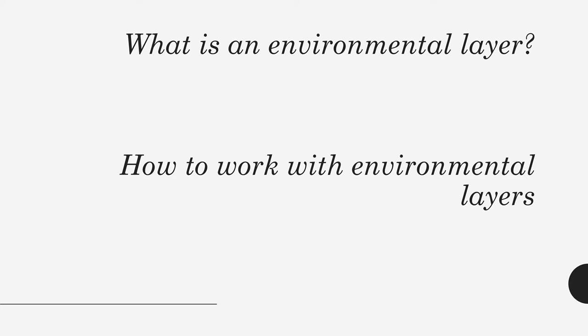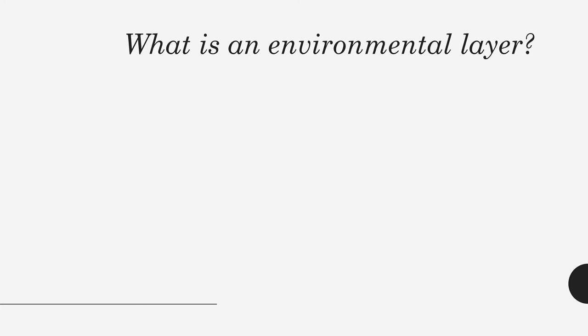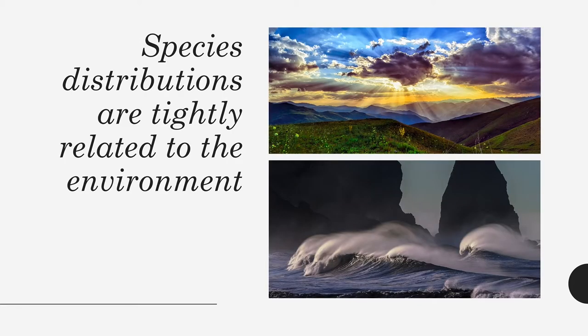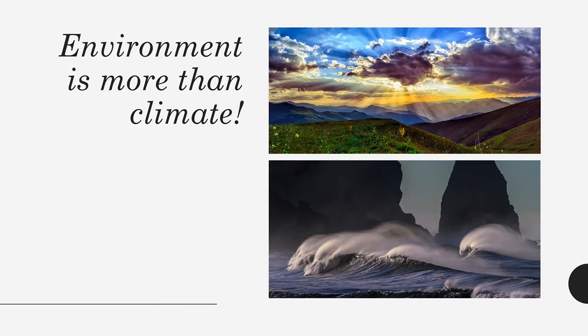First, what is an environmental layer? We all know that species distributions are tightly related to the environment — we have a feeling that species are here and not there because the climate is like that, or the pH of the soils is like that, or maybe the salinity is like that. You can guess that environment is more than climate; it is all the abiotic conditions that are there.